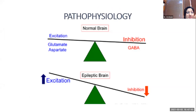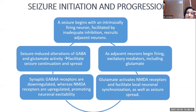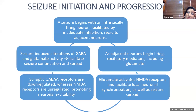The pathophysiology is associated with failure of GABA-mediated inhibition and increase in glutamate-mediated excitation. Seizures begin with an intrinsically firing neuron facilitated by inadequate inhibition, which recruits adjacent neurons. As adjacent neurons begin firing, excitatory mediators like glutamate are released, activating NMDA receptors and facilitating local neuronal synchronization and seizure spread. GABA receptors are down-regulated and NMDA receptors are upregulated, further promoting seizure spread.